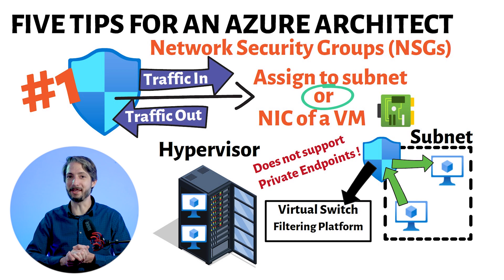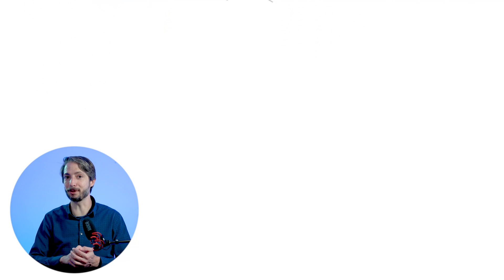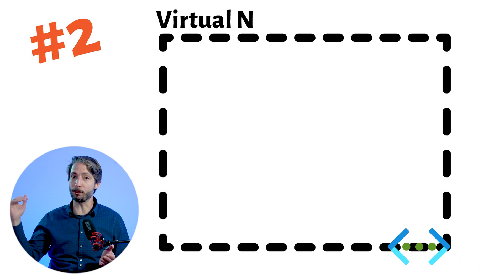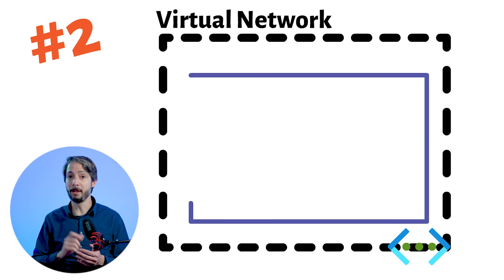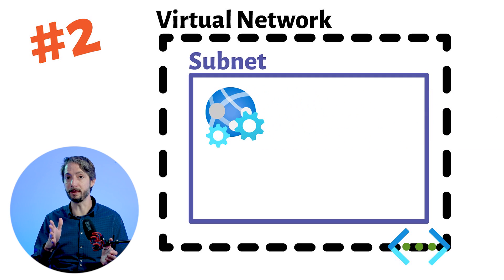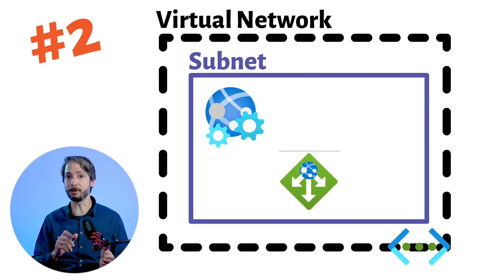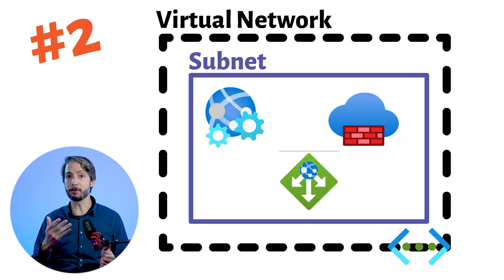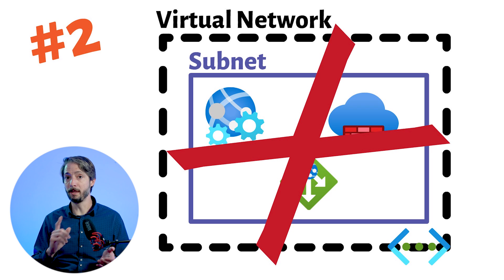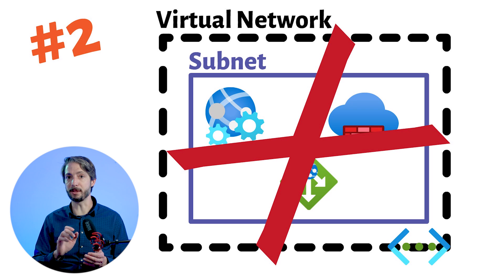That was awesome information on the NSGs. We're now moving on to tip number two and it's about subnets. You cannot just have one big subnet in a VNet and deploy all your services into one. Certain services impose restrictions on the subnet they are deployed in, limiting the application of policies, routes, or combining VM and service resources within the same subnet. Microsoft recommends to check with each service on the specific restrictions as they may change over time.